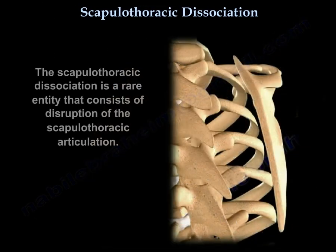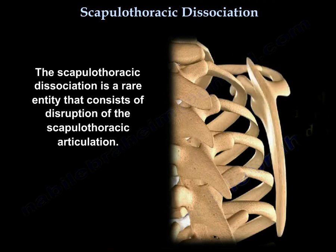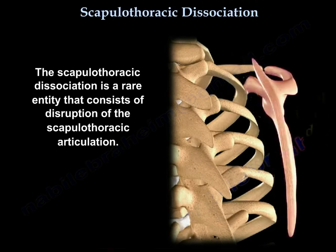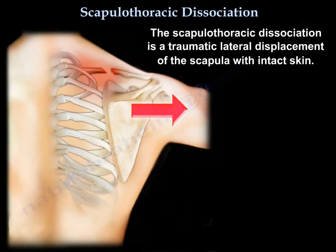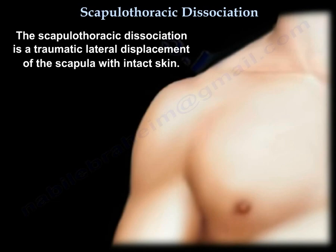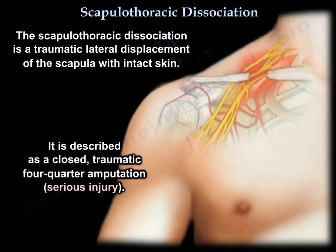Scapulothoracic dissociation is a rare entity that consists of disruption of the scapulothoracic articulation. It is a traumatic lateral displacement of the scapula with intact skin. It is described as a closed traumatic forequarter amputation. It is a serious injury.